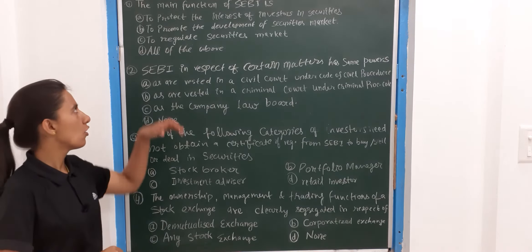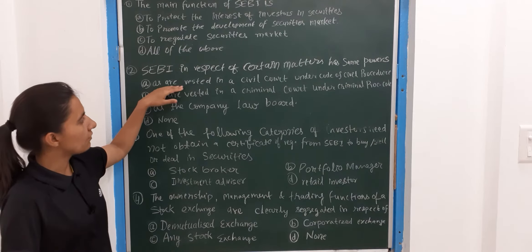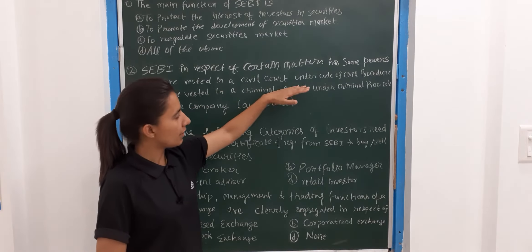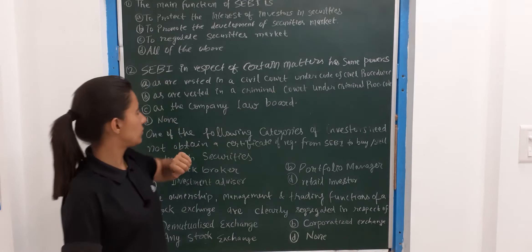Next question: SEBI in respect of certain matters has the same powers as — A option is as are vested in a civil court under code of civil procedure, B as are vested in a criminal court under criminal procedure code, C as the company law board, D none. The correct answer is as are vested in a civil court under code of civil procedure.